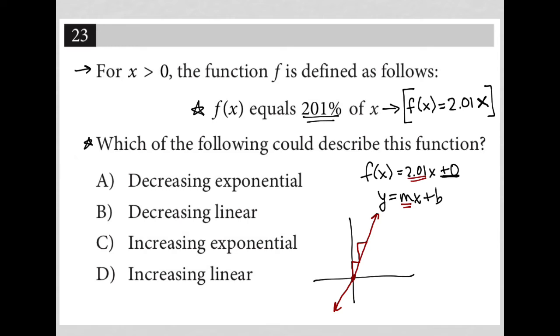Which means that none of this will exist down here because we're told that x is greater than 0. x can only be positive, so we're only going to be increasing in a linear way.